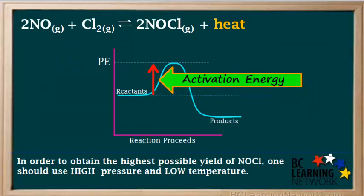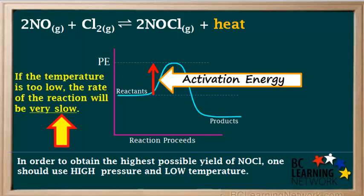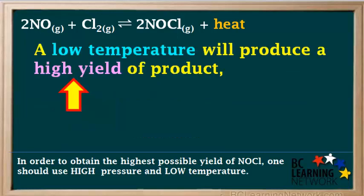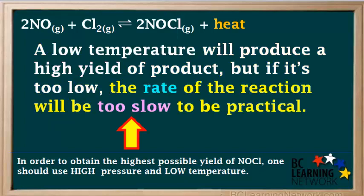However, there is one more thing we need to consider. Even for an exothermic reaction that favors products, there is still an activation energy barrier the reactants must overcome before they have successful collisions. If the temperature is too low, a small fraction of the reactant molecules will have sufficient energy to overcome the activation energy barrier, and the reaction rate will be very slow. For an exothermic reaction, a low temperature will cause a shift to the right and produce a high yield of product, but if the temperature is too low, the rate of reaction will be too slow to be practical. At equilibrium, we will have a high yield of product, but it will take much too long to actually reach equilibrium.